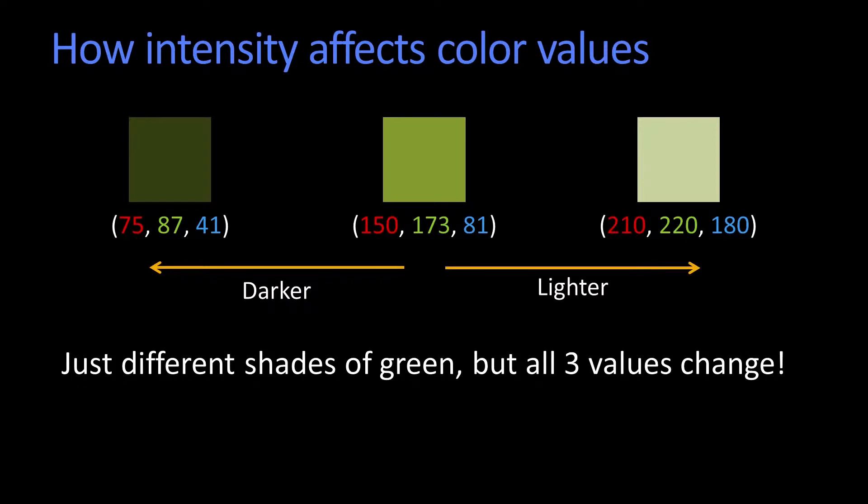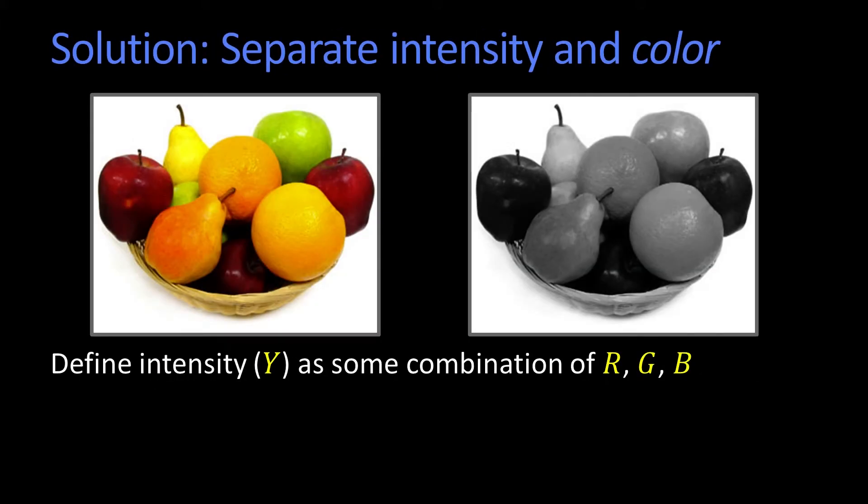So how might we think about creating some channels that make it easier to separate these things? Well, we already saw this from our previous conversation. Let's separate out the intensity from the color. So the first thing we're going to do is we're going to find intensity Y as some combination of R, G, and B.